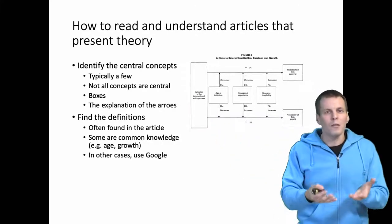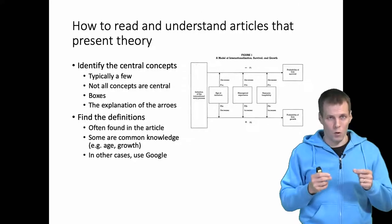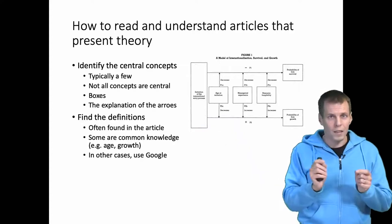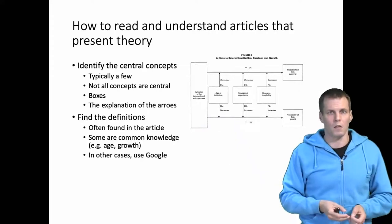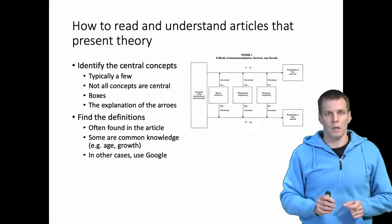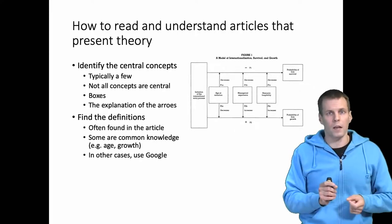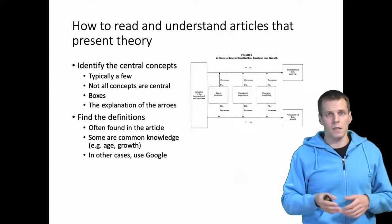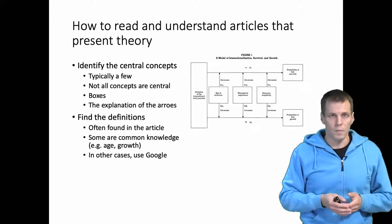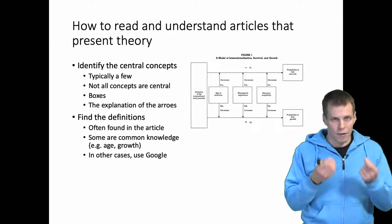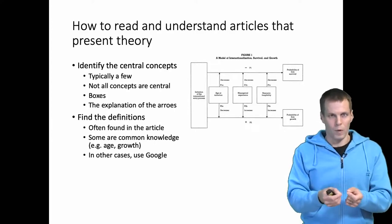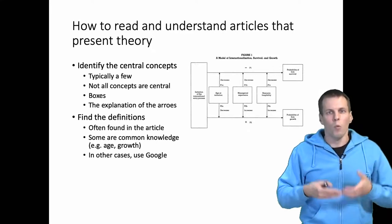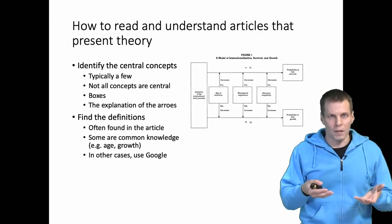Then you need to look at the boxes and the explanation of the arrows. Once you have the list of the key concepts, then you start looking at the definitions, what those definitions are. Often found in the article, underline the key definitions. If you can't find it in the article, you open the article, you type the concept in the PDF search. If you still can't find a definition, then put it in Google. Sometimes the concept like age is common knowledge and it does not need to be defined. Once you have identified the key concepts and their definitions, then you read the article. So once you understand what imprinting is, then you are in the position to read and understand why imprinting would have an effect on, for example, the probability of firm growth.